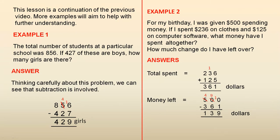Example 1: The total number of students at a particular school was 856. If 427 of these are boys, how many girls are there?